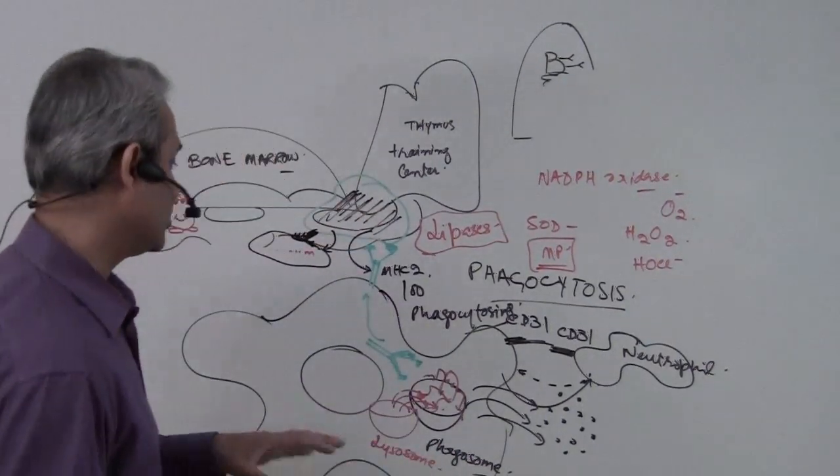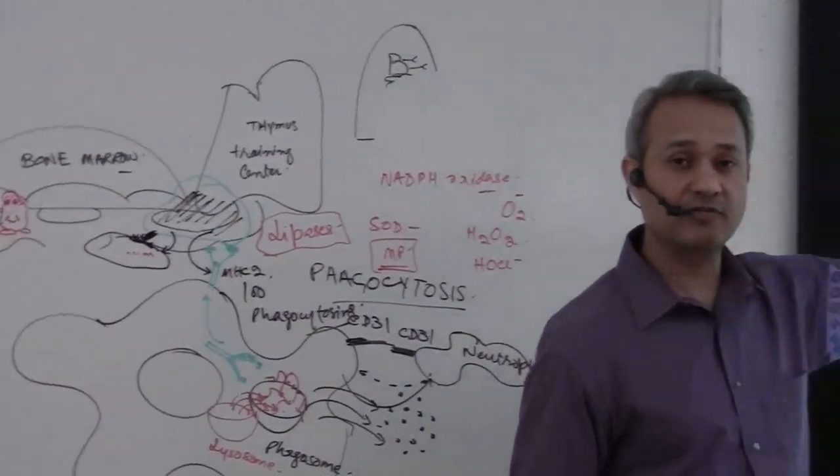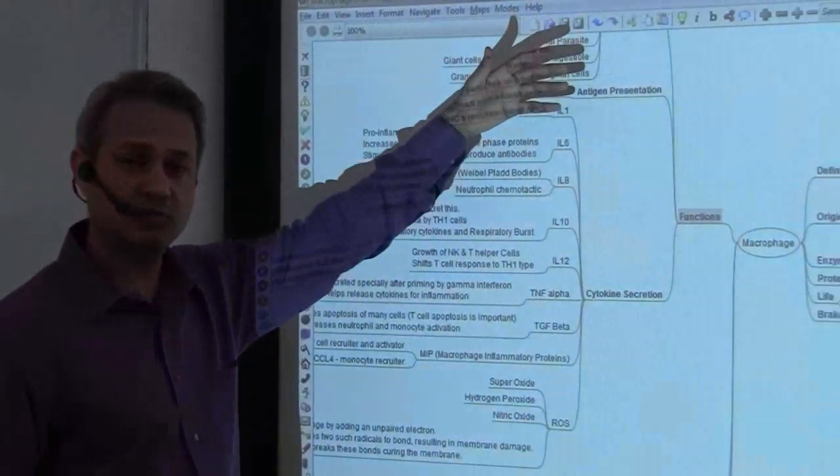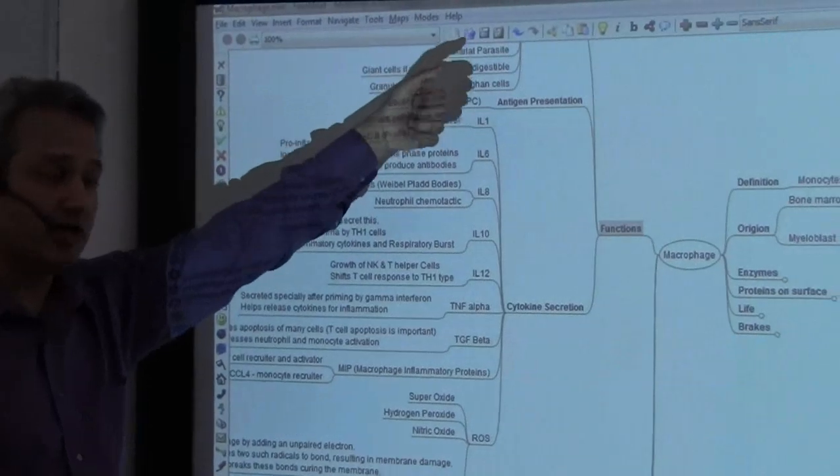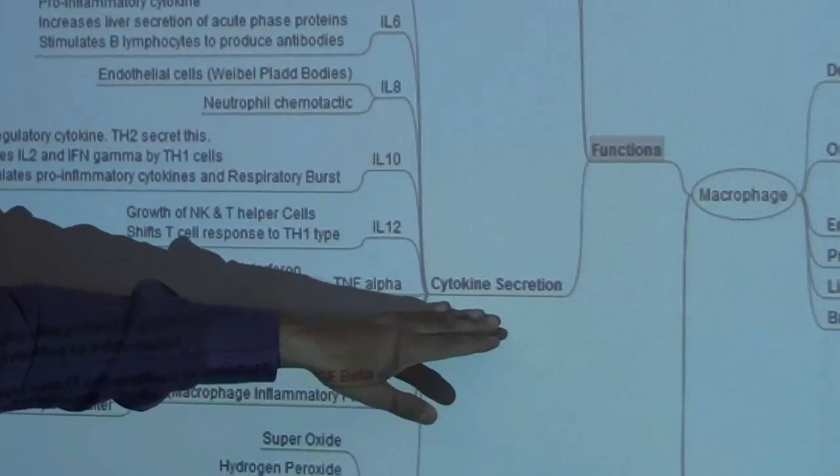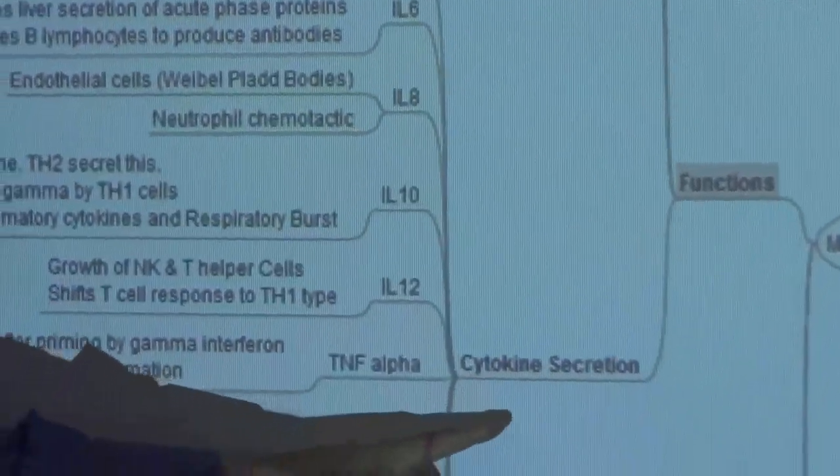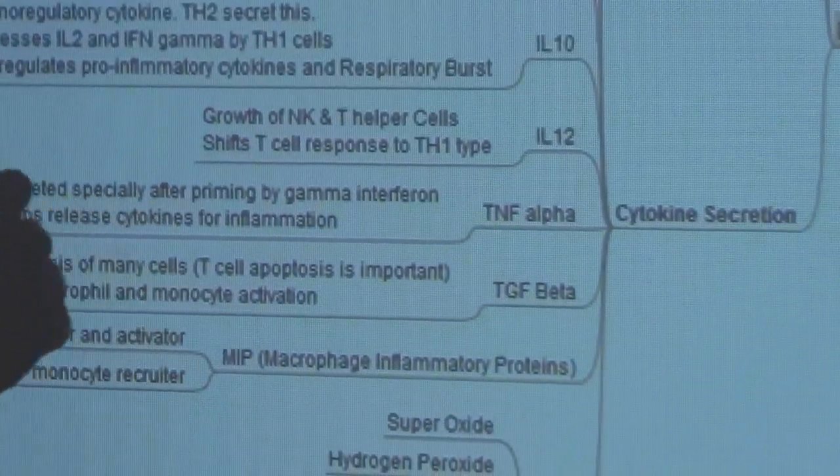Alright guys, welcome back. So we were talking about the macrophage. We were talking about the three primary functions of the macrophage. So the primary functions were phagocytosis, that is one, number two, antigen presentation, and number three, cytokine secretion. We talked about phagocytosis, we talked about antigen presentation, now we are talking about the cytokine secretions.